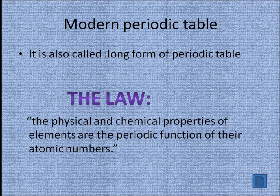The periodic table is a systematic arrangement of elements in groups and periods. The modern periodic table is also called the long form of the periodic table. It was actually formed by Henry Moseley, an English physicist, in 1913. According to him, the atomic number is a better fundamental property of an element compared to its atomic mass. He also gave a law called the modern periodic law, which states that the physical and chemical properties of the elements are a periodic function of their atomic numbers.